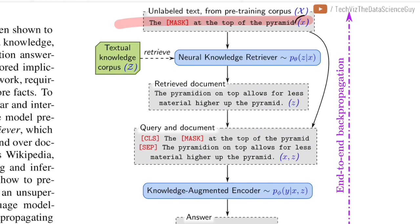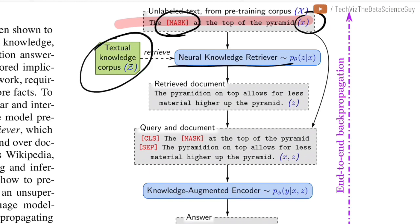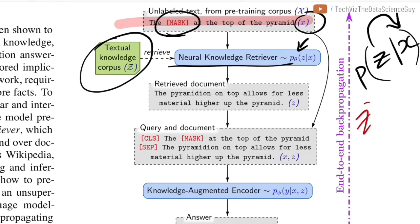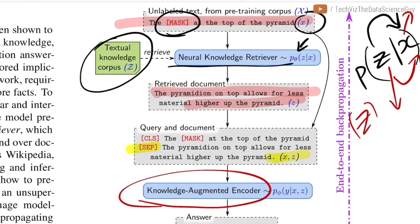In the diagram, unlabeled text x with a masked word goes into the knowledge retriever, which takes in the entire corpus Z. The retriever learns parameters theta so that given input document x, it outputs a single document z from corpus Z most relevant to x — the document that best supervises prediction of the masked token. The retrieved document is then concatenated with the original text using a separator token, forming a pair (x, z), which is passed to a typical language model.